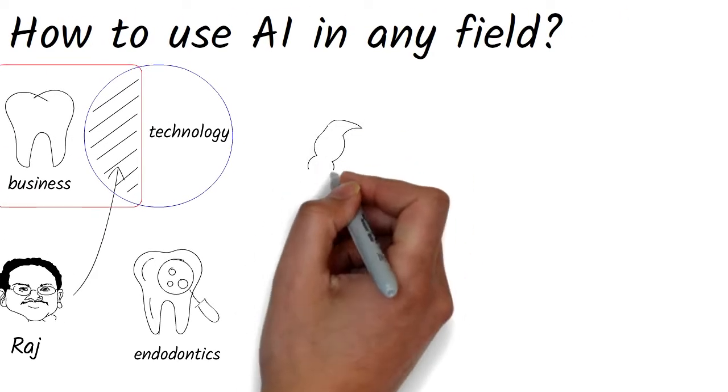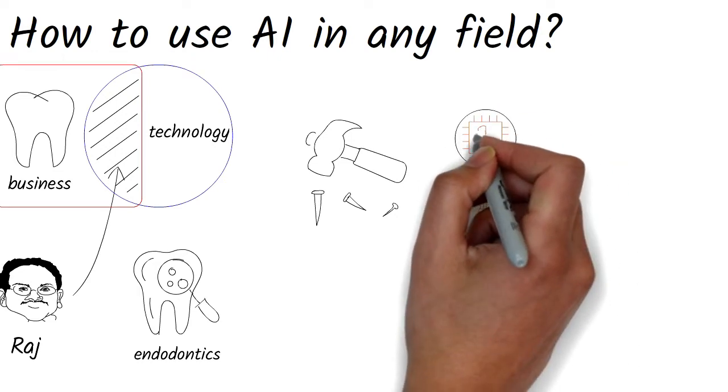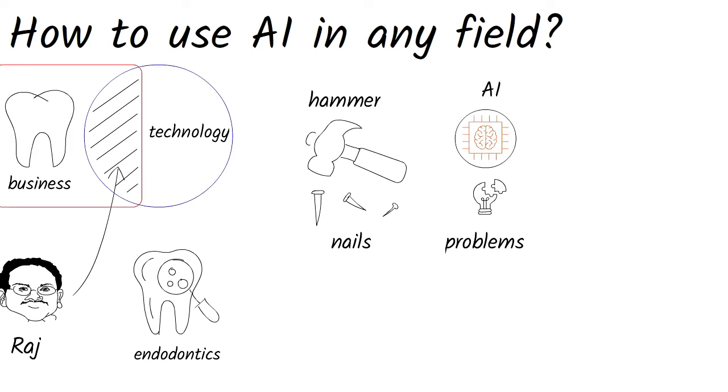There's a saying that for a person with a hammer, everything looks like a nail. So, one may assume that I look at every business problem and I think AI is a solution for it. I, and I believe most people, don't think that way.